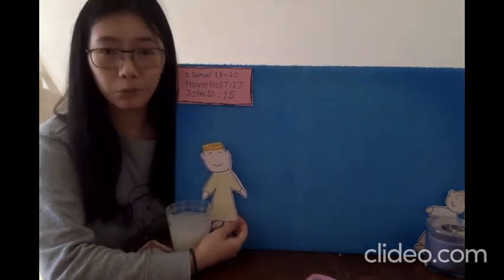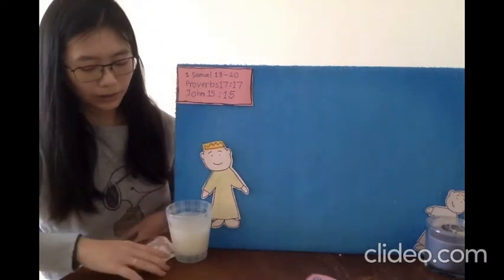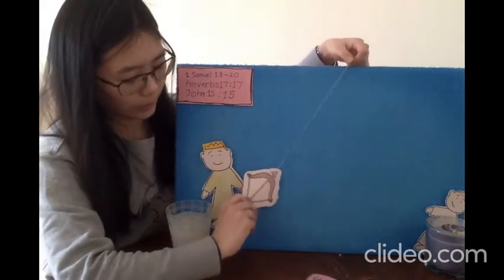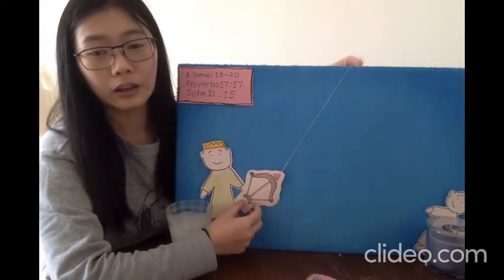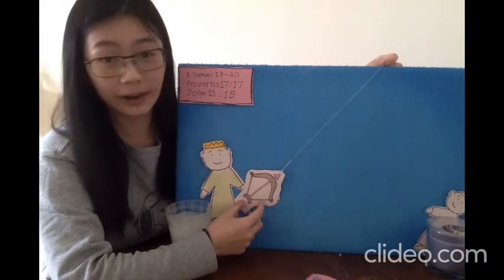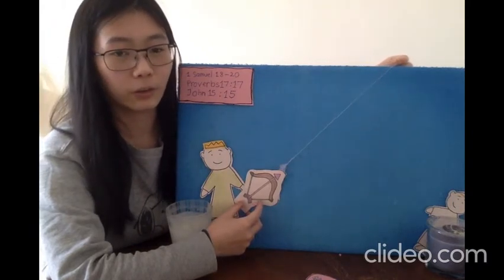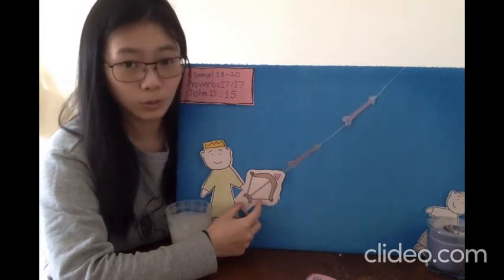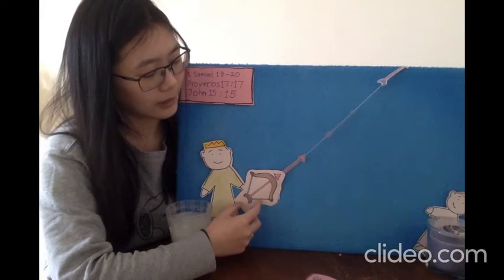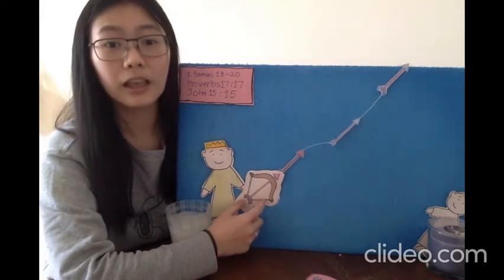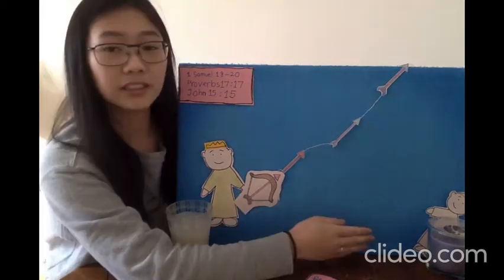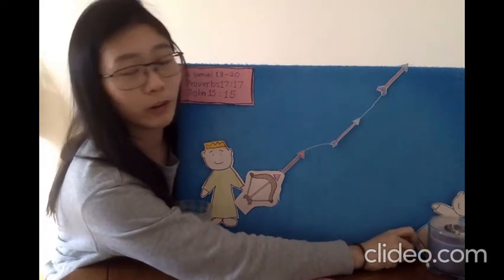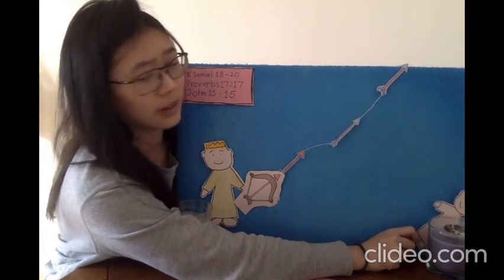So, early in the morning, Jonathan went out to the field and took his bow and arrow with him. Now, can you count with me how many arrows he shot? So, he shot one, two, three arrows into the sky. And this was a signal to David to run away from the city and hide. And that's what David did.